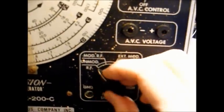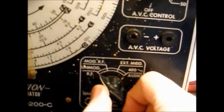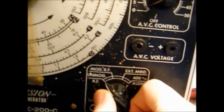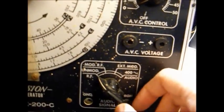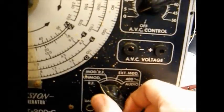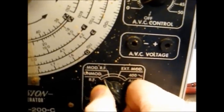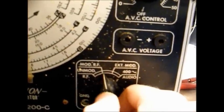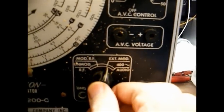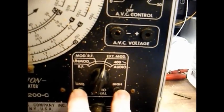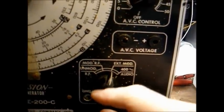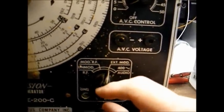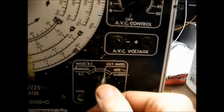And here's our selector switch. We have unmodulated RF output, which means simply an RF carrier with no audio signal riding on it. Modulated RF output, external modulation, that's where you can feed an external audio source into the signal generator. And that audio source will ride on the RF carrier.